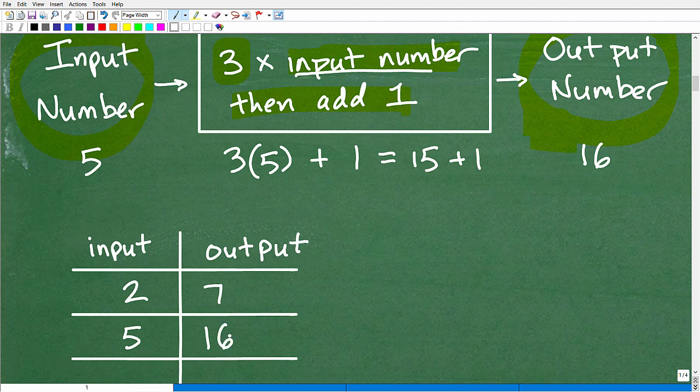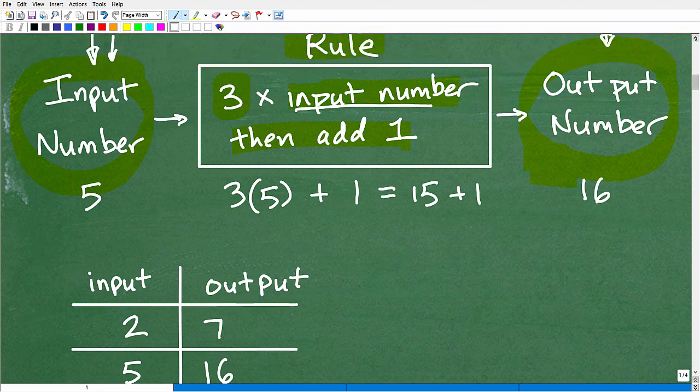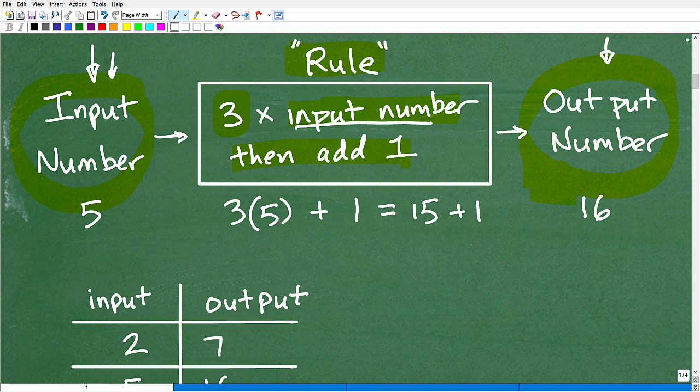Okay. So let's put this in our little table here. So five. And then I had an output of 16. Okay. So what you're seeing here, all right, is basically a function.